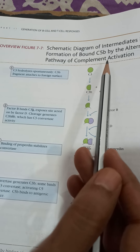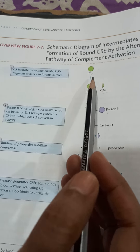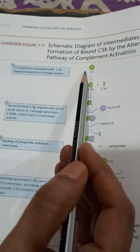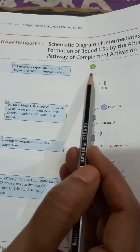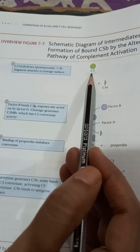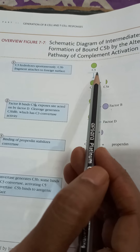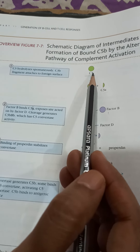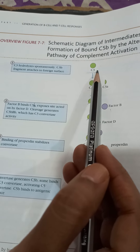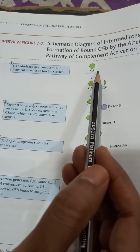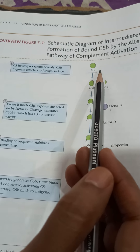Antibodies are not required for activation of this pathway. This pathway starts with spontaneous cleavage of C3. In the classical pathway, C3 is cleaved by C3 convertase, but here C3 convertase is not required. C3 can undergo spontaneous cleavage, but this happens very slowly.